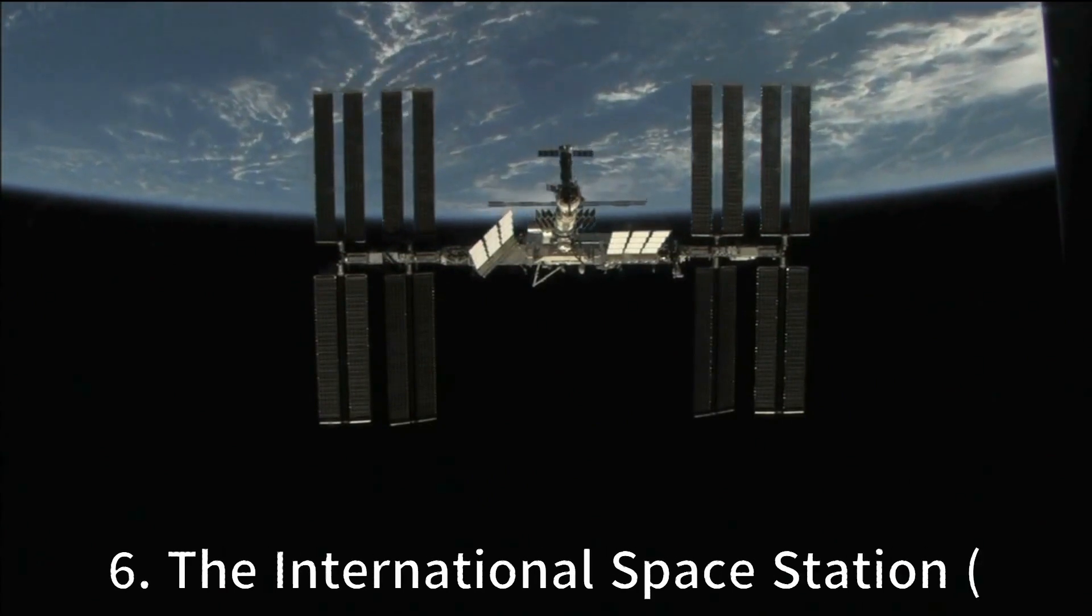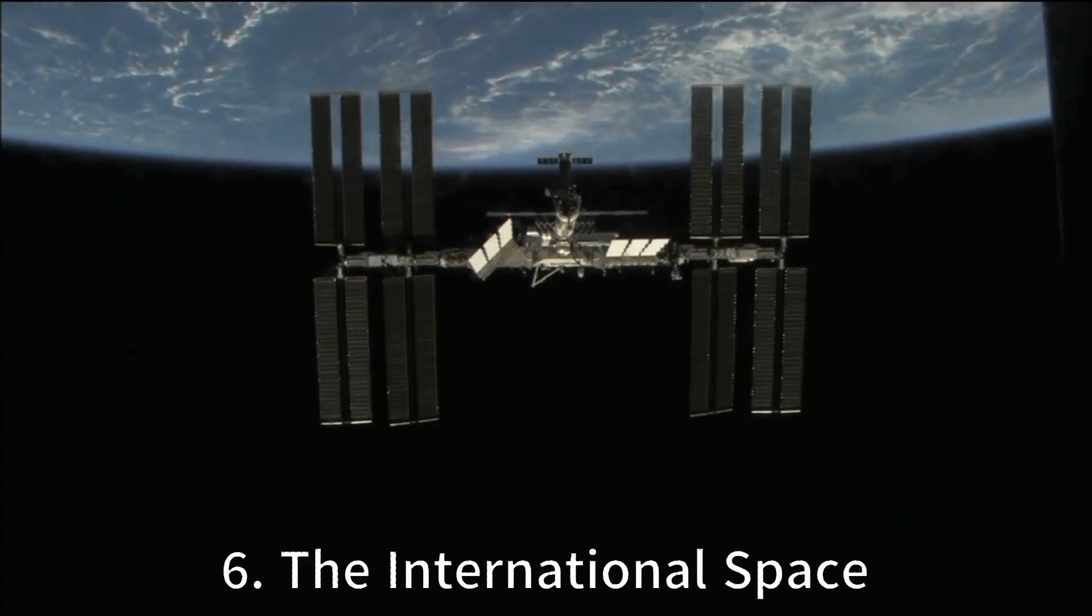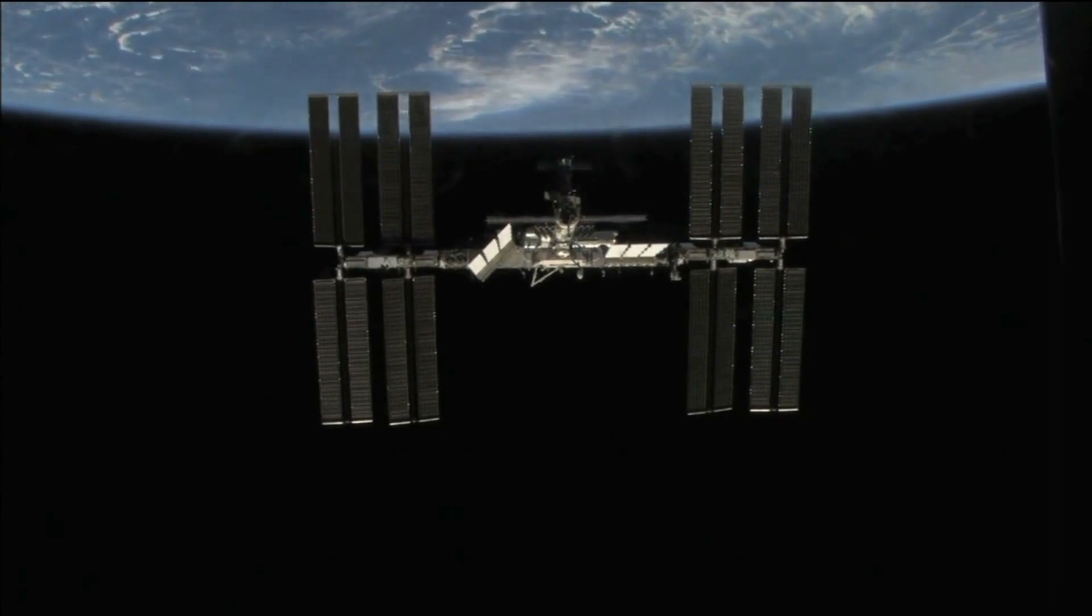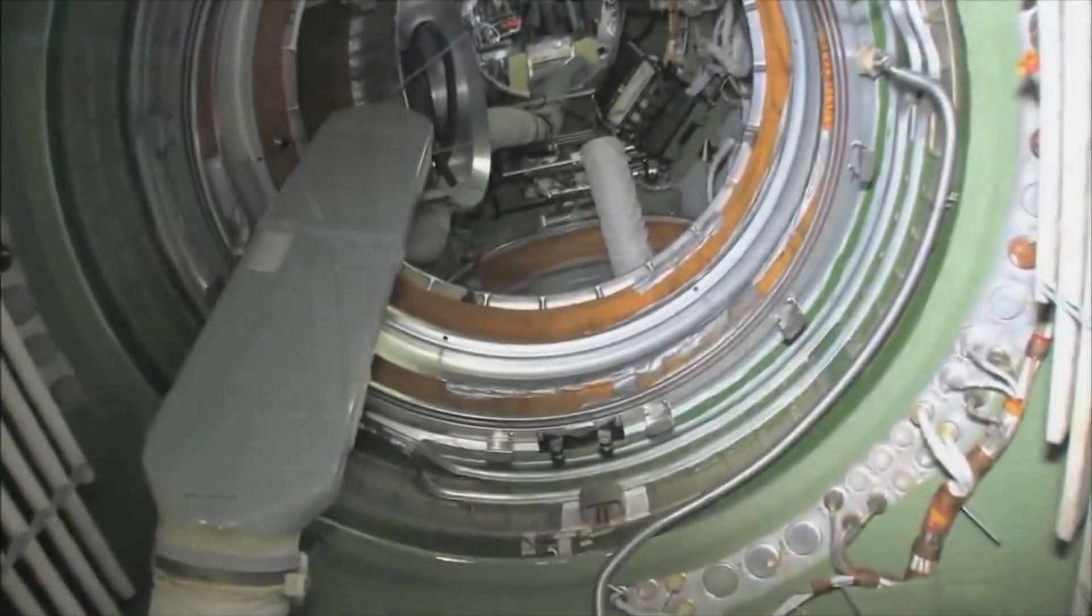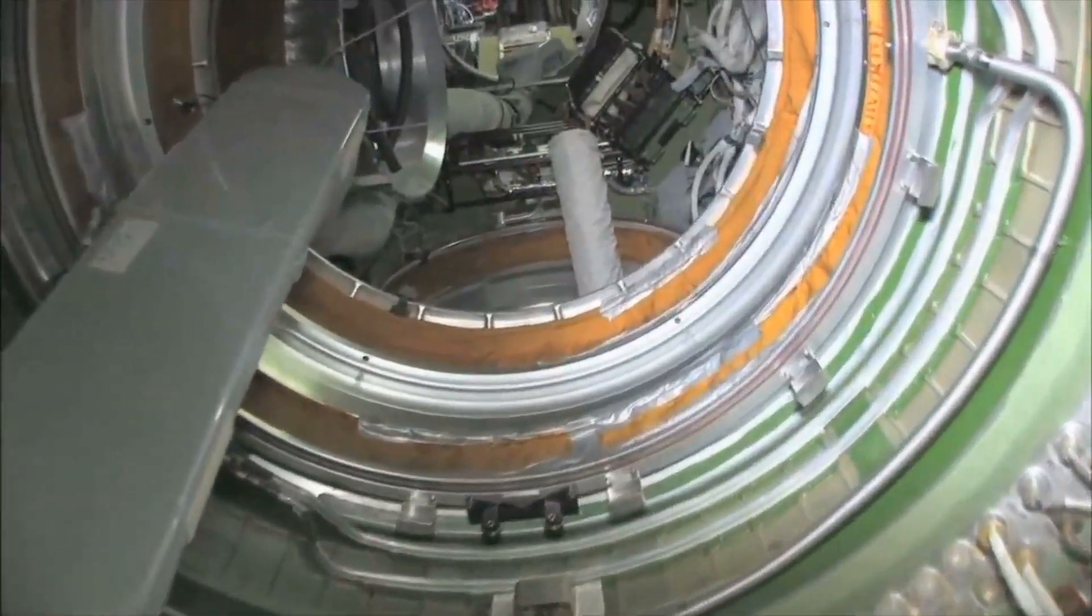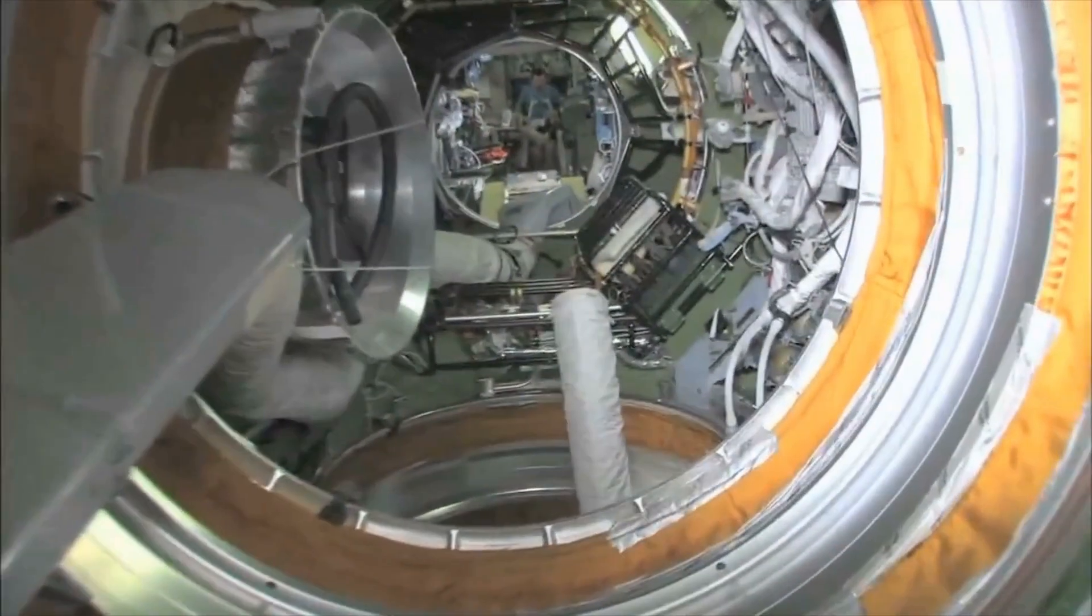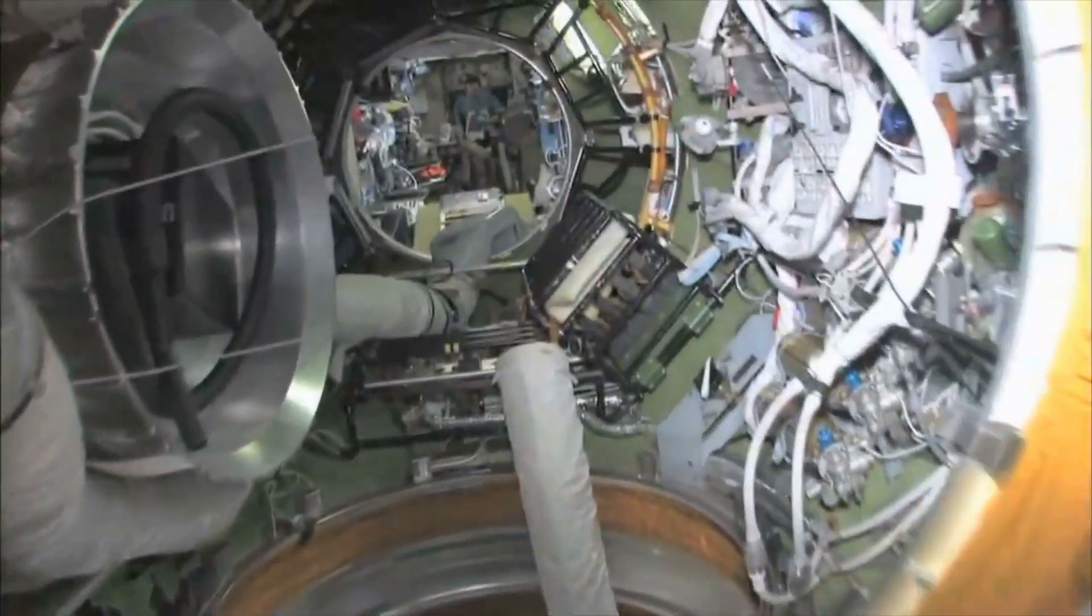The International Space Station ISS is the largest human-made object in space and is visible from Earth with the naked eye. It is approximately the size of a football field and orbits the Earth at an altitude of around 250 miles.